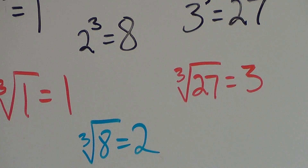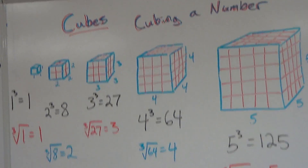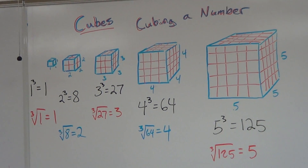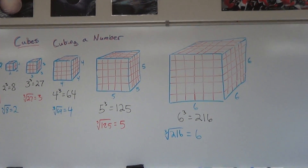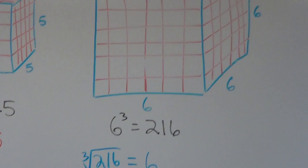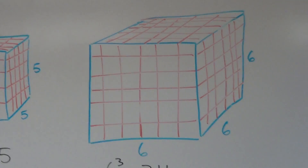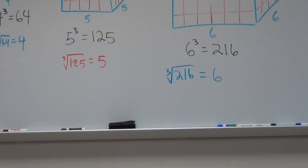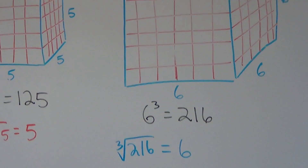You're going to do it a little bit differently on a calculator — I'm going to show you how. In these cube drawings I made, I gave the lengths of the sides of the cube, and then we cubed it. For example, a 6 by 6 by 6 cube is made up of 216 cubes. So the cubed root of 216 is 6. Let me show you a different example.